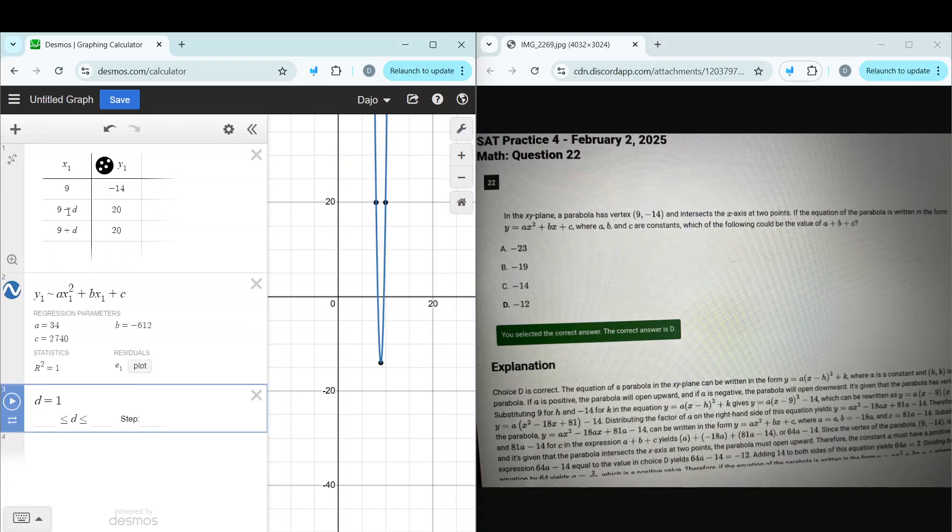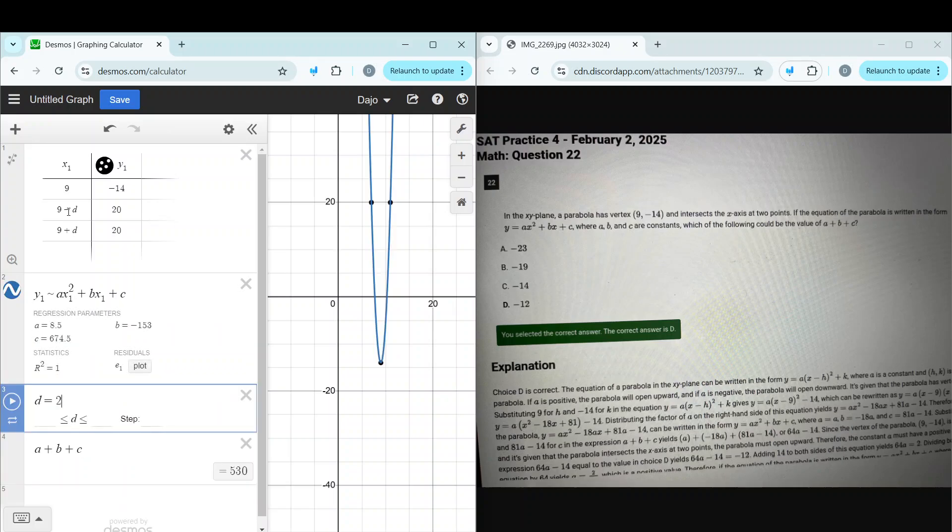So these are potential a + b + c values it could be. It could be 2,162, it could be 530, but we're not looking for an exact value, we're looking for what could it be. So in other words, when it says 'could,' that means three values are wrong and one value is right. So we have to mess around with the restrictions to see what makes three of these values wrong.